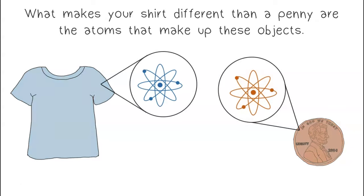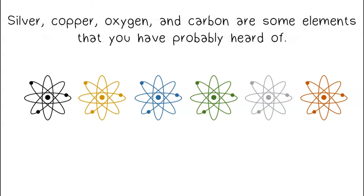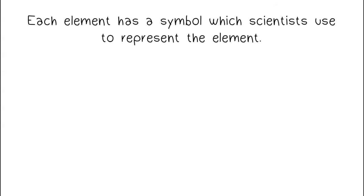There are 118 different atoms from which all matter is built. These different types of atoms are called elements. Silver, copper, oxygen, and carbon are some of the elements that you have probably heard of.